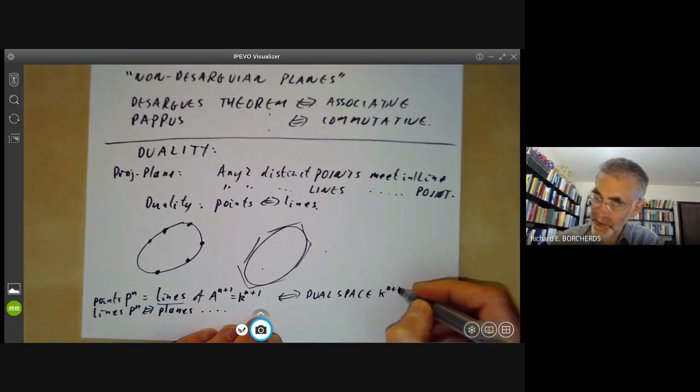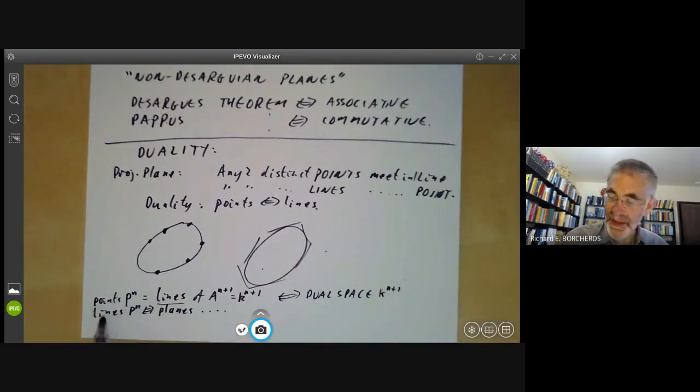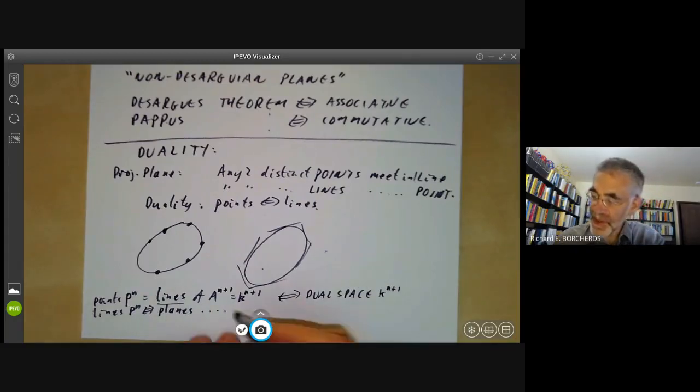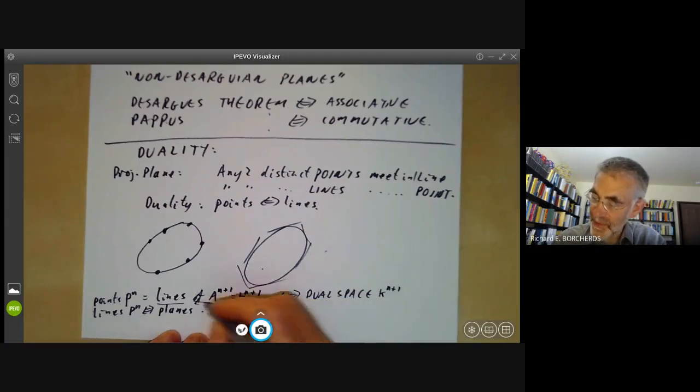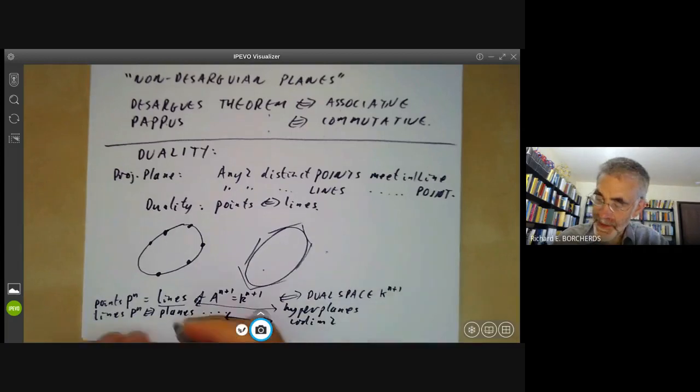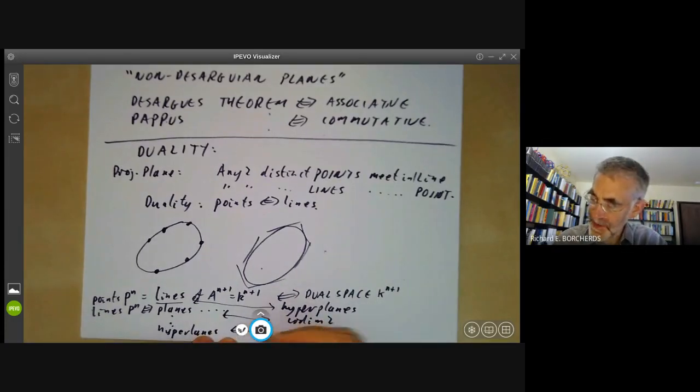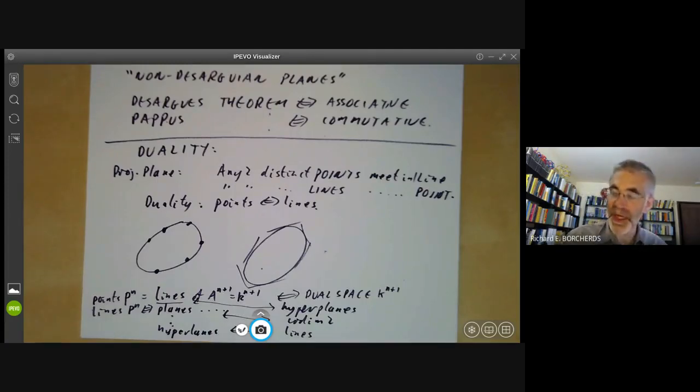And if you've got a line in A^{n+1}, you can take its dual, which would be a hyperplane, just consisting of all linear transformations vanishing on this. So lines correspond to hyperplanes. Planes correspond to things of codimension two and so on. And you get all the way up to hyperplanes, which correspond to lines, which are just points of projective space. So duality for projective space is very closely related just to taking the dual of a vector space.